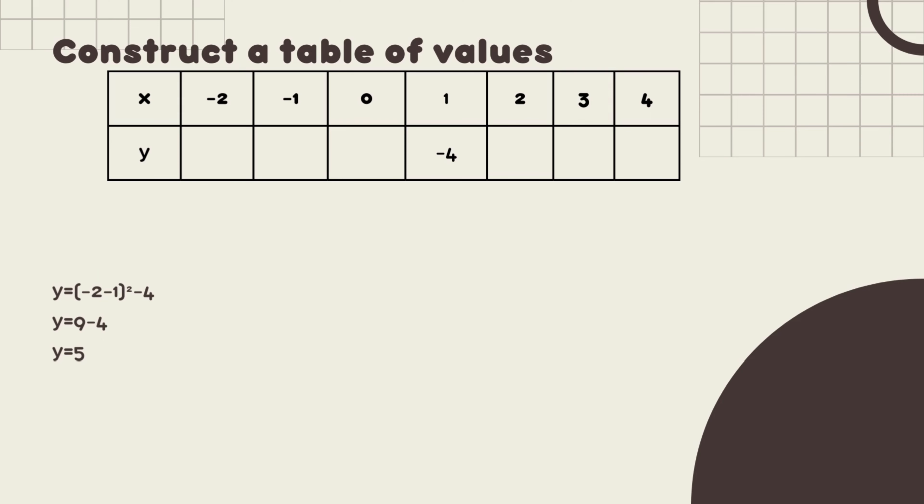Now moving on to constructing the table of values. So where did we get 1 and negative 4? Our answer for h is 1, which is the x, which will become x. And our y is negative 4, which is the k. Now moving on to constructing the table of values. Values of x are negative 2, negative 1, 0, 1, 2, 3, 4. Now there's only one value for y, which is negative 4. So for the problem below, you can see we will use y equals the quantity of x minus 1 squared minus 4.